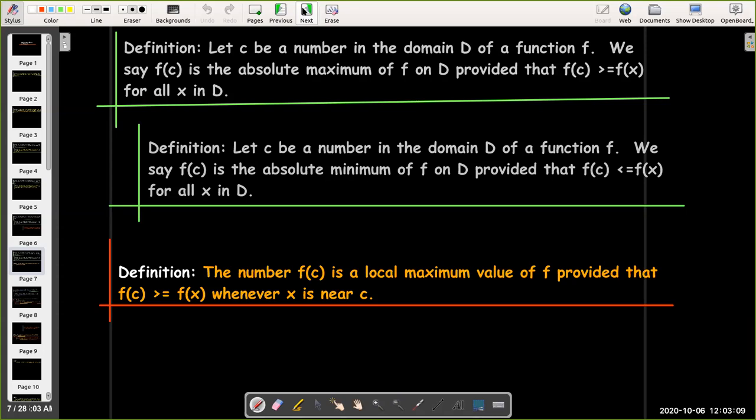Now you may have a point on the graph where it is not the absolute highest, but it's higher than all of the points around it. And we would call the y-coordinate of that point a local maximum. So f(c) is a local maximum, provided that f(c) is larger than any function value around it, whenever x is near c.